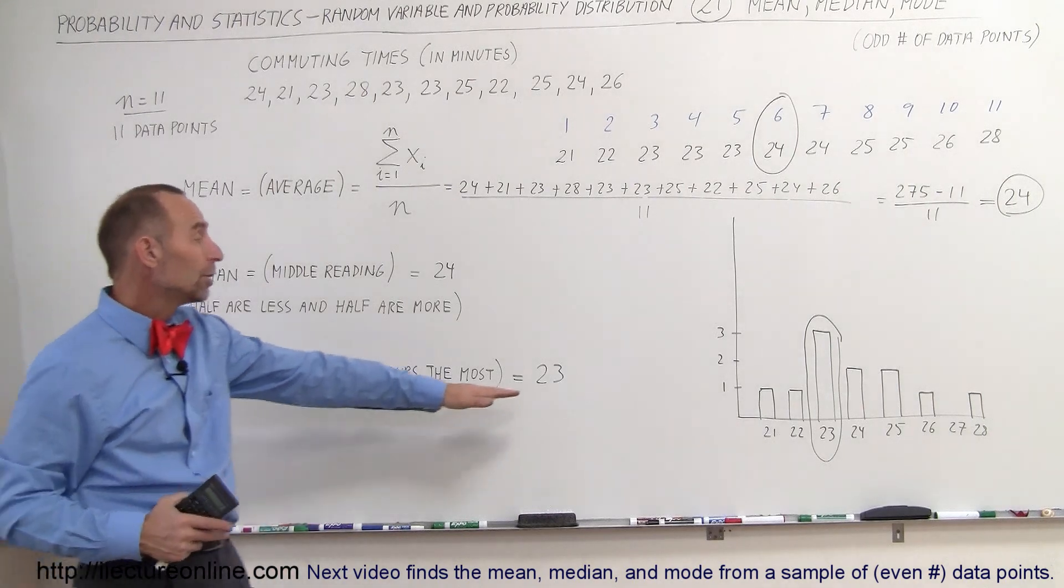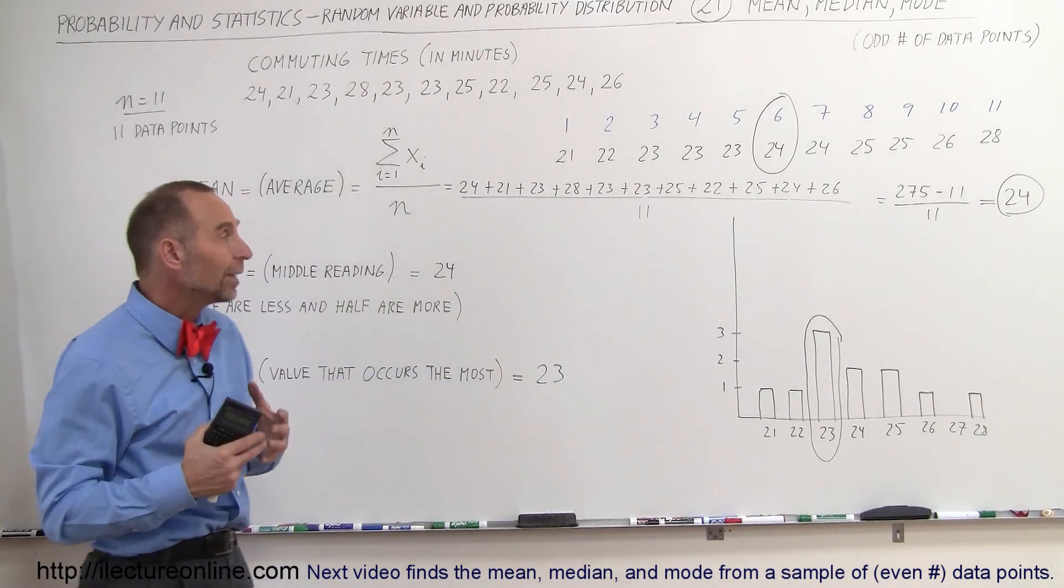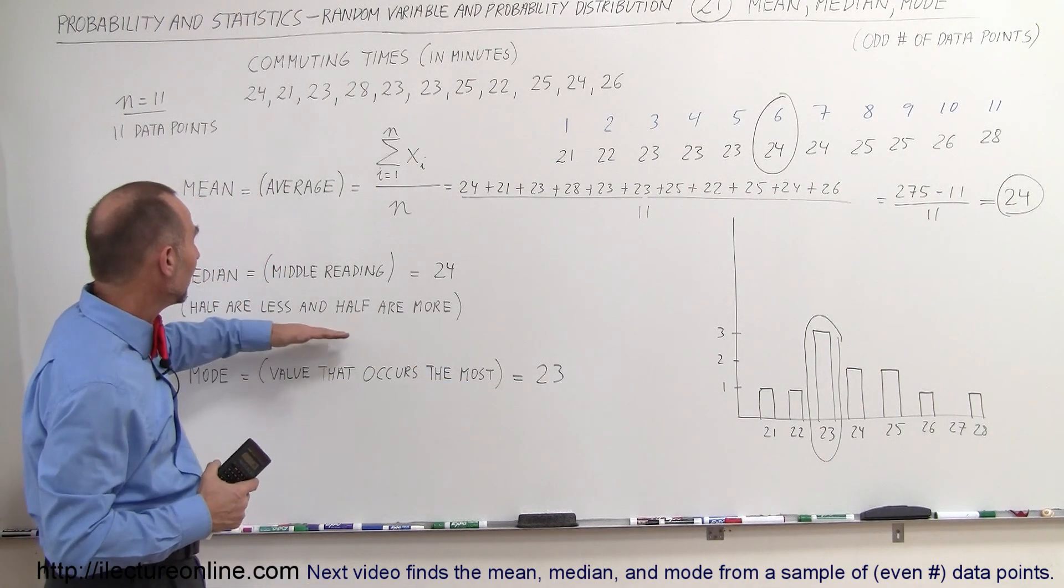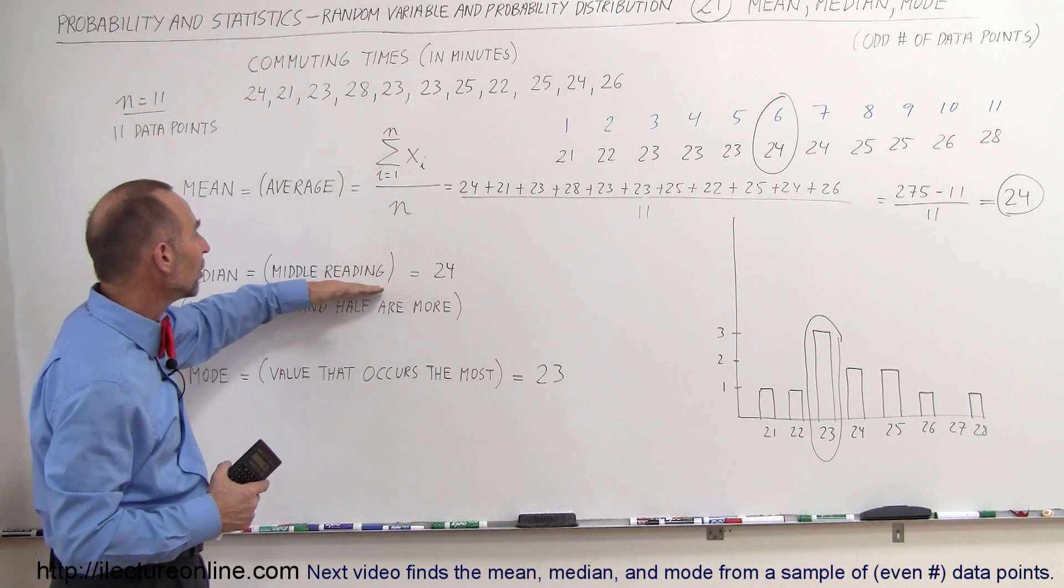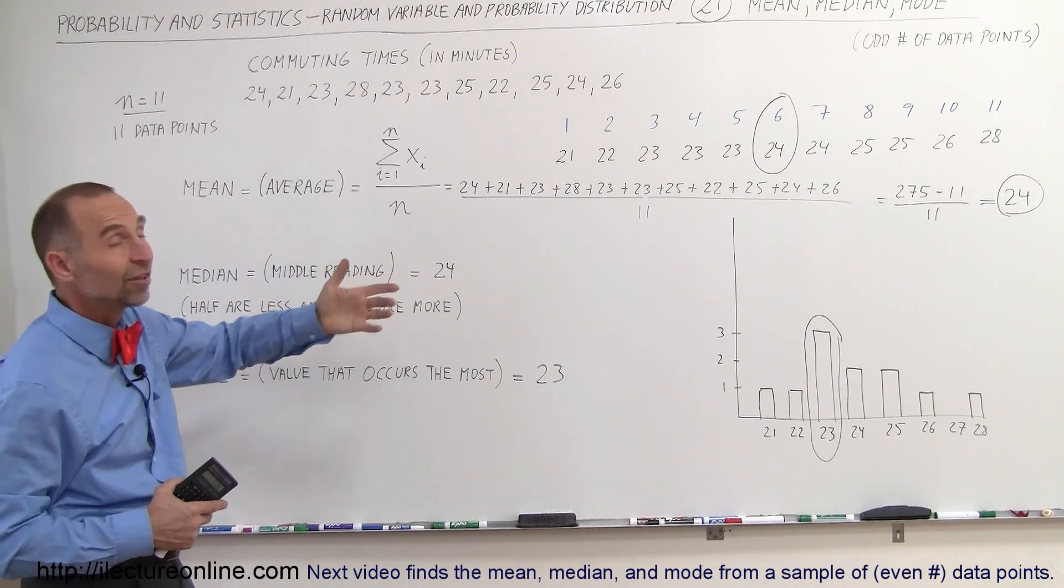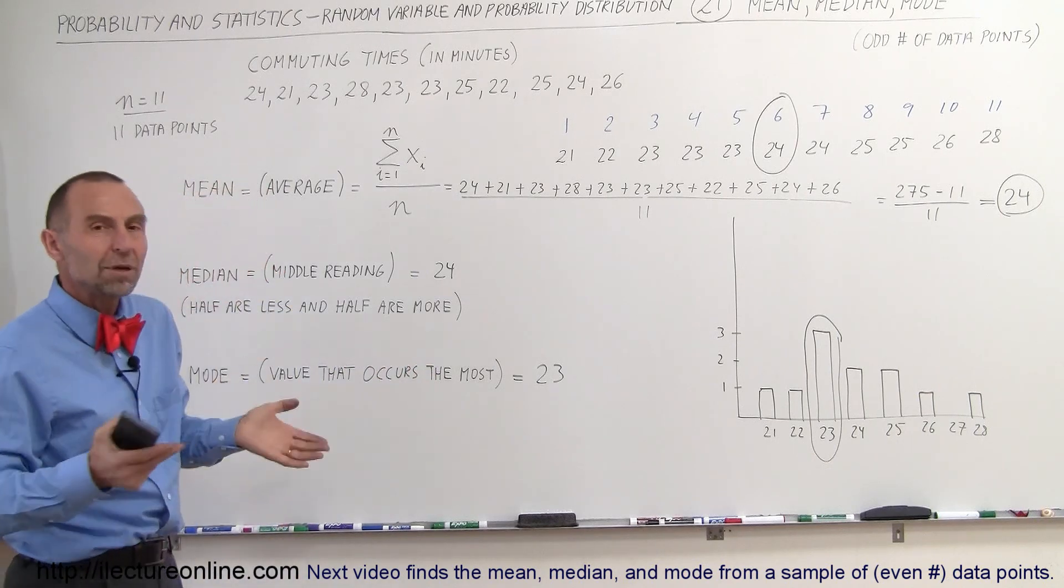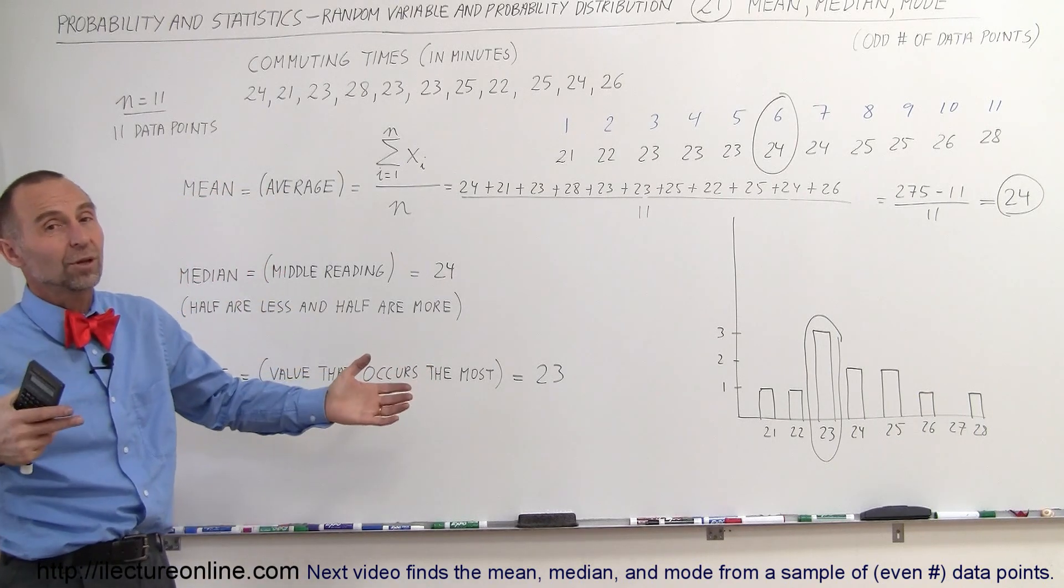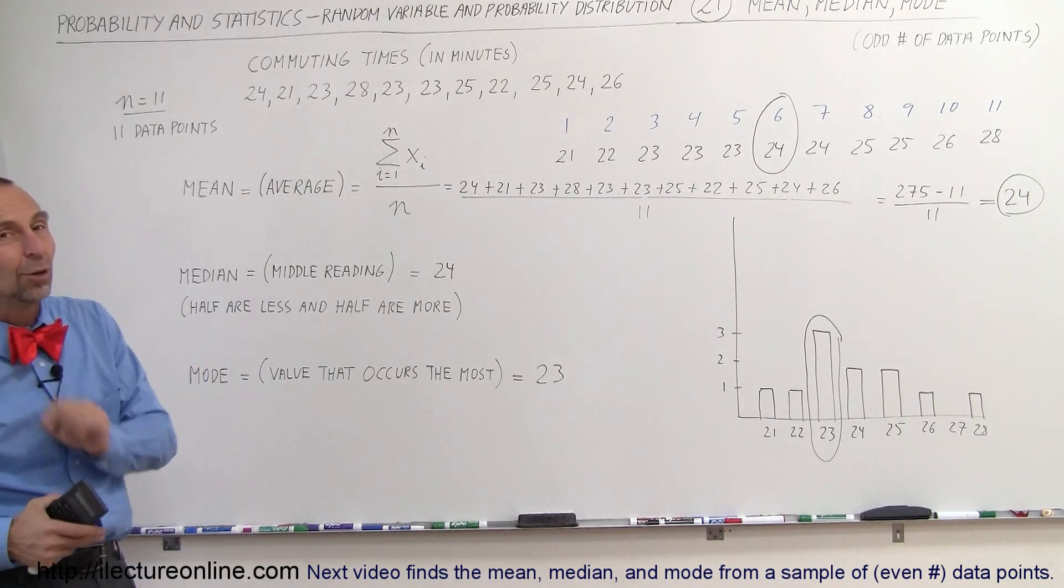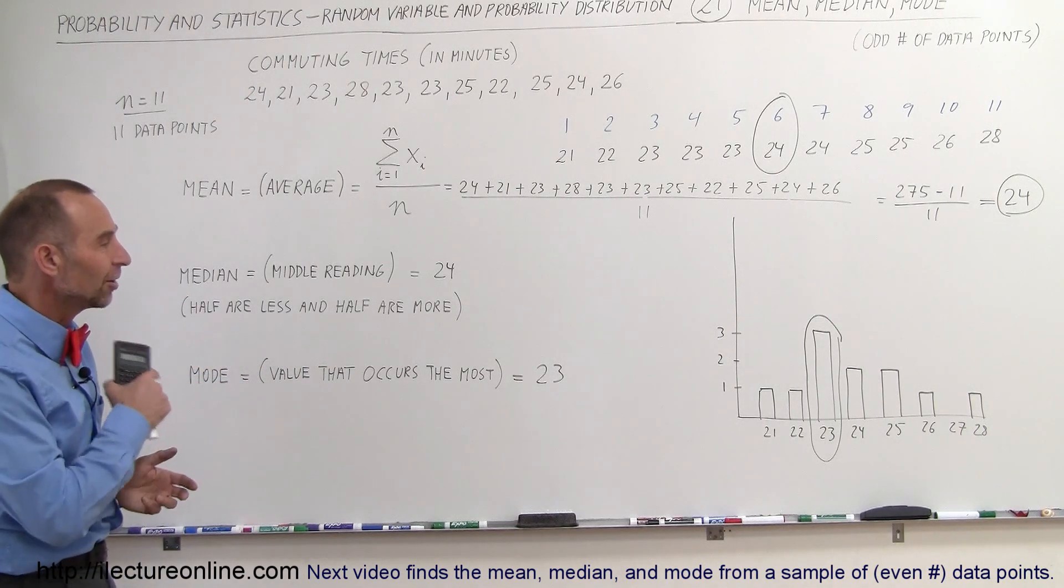You don't always have a clear winner, especially with small quantities of data points. And it's sometimes not that easy to find the middle reading, and we'll show you that, for example, when the number of readings is even instead of odd, then what is the middle one? If there's ten of them, which is the middle one? Is it the fifth one? Is it the sixth one?